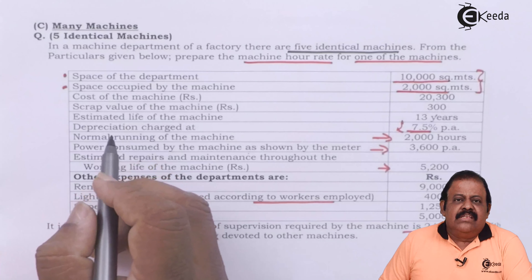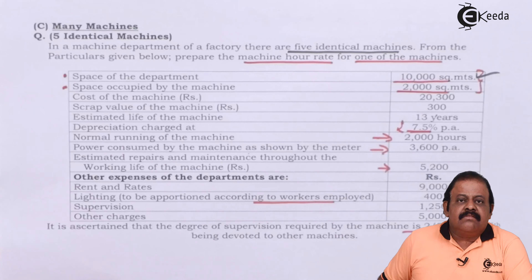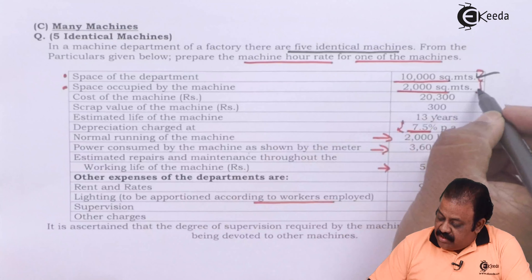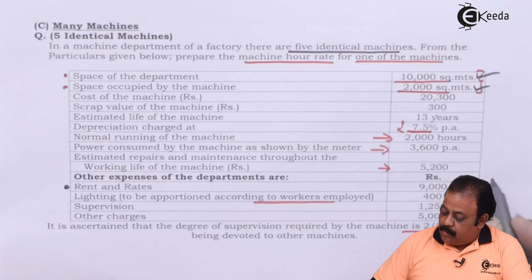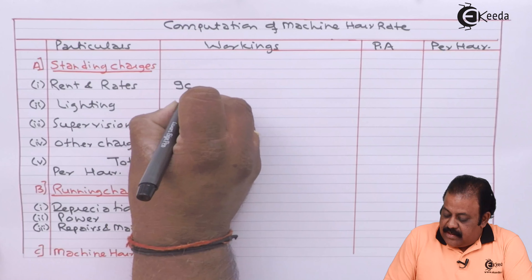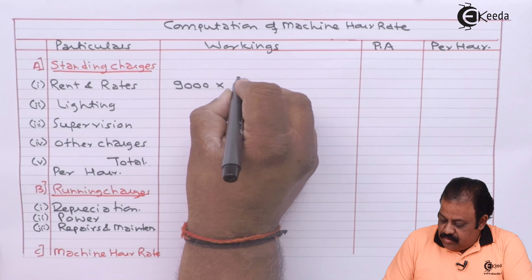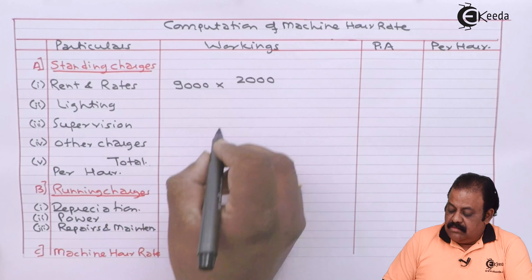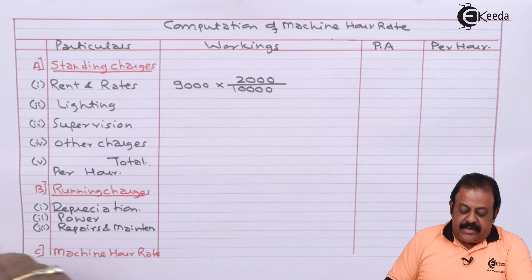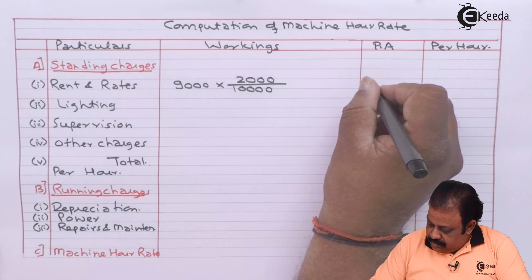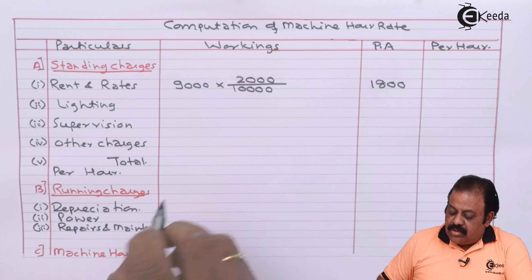First, we are required to consider rent. Space of the department is 10,000 square meters, space occupied by the machine is 2,000 square meters, and rent and rates given is Rs. 9,000. So 9,000 multiplied by 2,000 divided by 10,000 square meters. The applicable rent per annum will be Rs. 1,800.